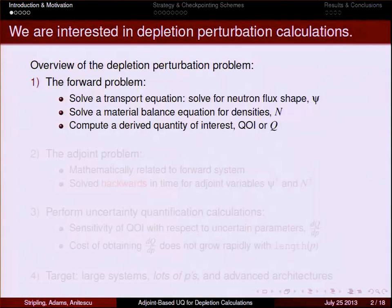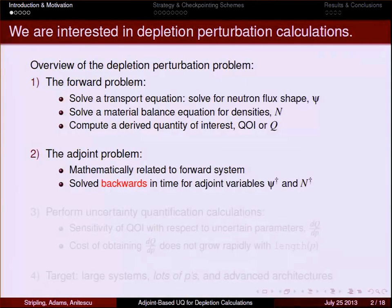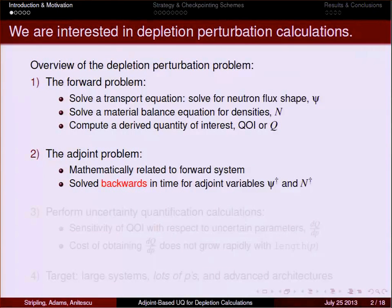The problem we are trying to solve is what we call a depletion perturbation problem. Big picture, we're solving some engineering system that gives us an answer to some design problem, and then we want to know not only what that answer is, but how sensitive that answer is to the uncertain parameters that feed into the simulation. We attack that problem with an adjoint-based technique. We solve a forward problem — in our case a transport equation — whose solution is the neutron flux shape, which I'll call psi throughout the talk. That tells you how many neutrons are moving in a certain direction at a certain time with a certain energy.